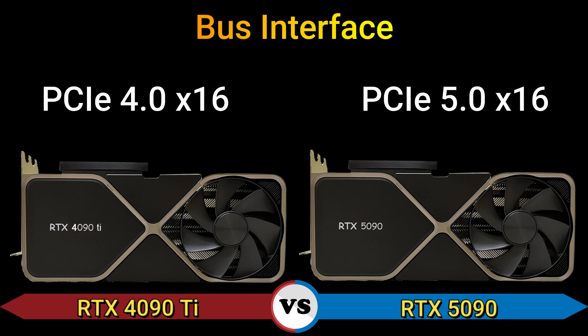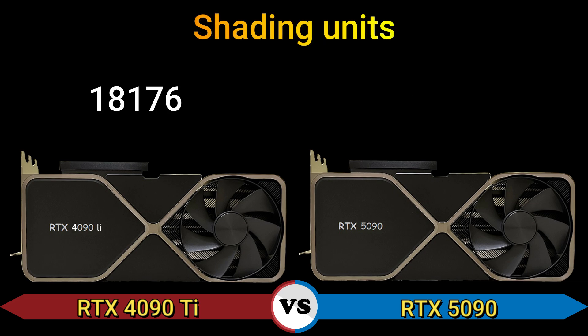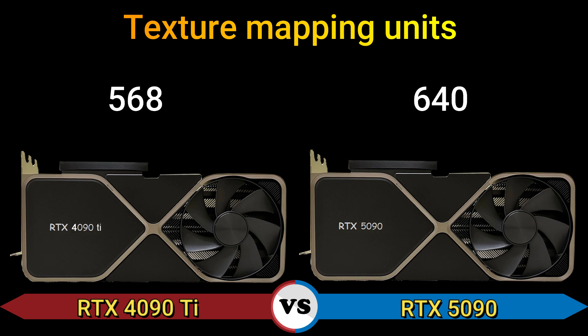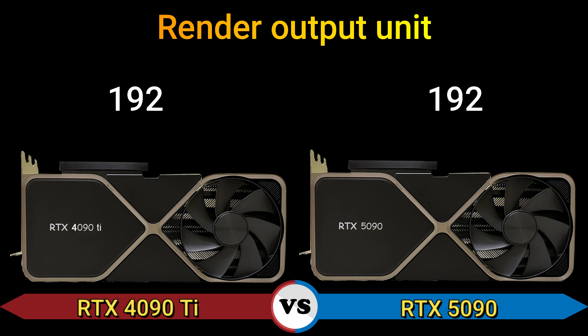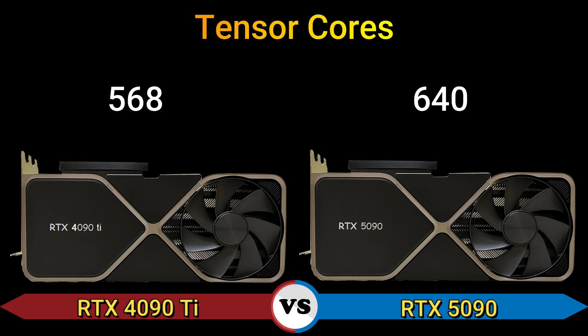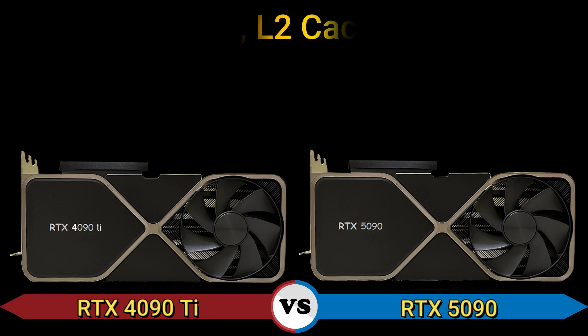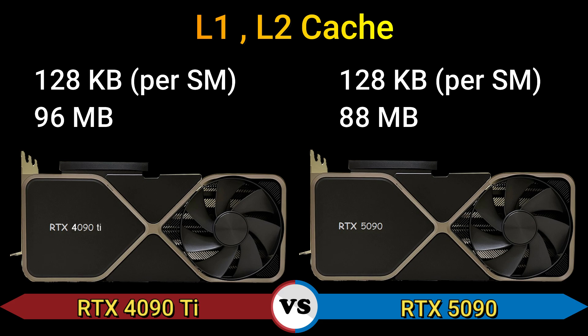Bus interface: PCIe 4.0 x16 and PCIe 5.0 x16. Shading units: 18176 and 2480. Texture mapping units: 568 and 640. Render output units: 192. Tensor cores: 568 and 640.